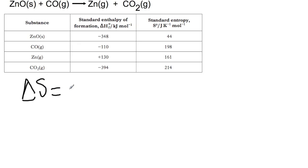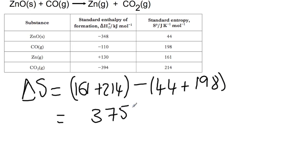Delta S is calculated in exactly the same way. We're going to take the entropy of our products, so 161 plus 214, and we're going to minus the entropy of our reactants, so 44 and 198. That gives us 375 minus 242, which gives us a positive entropy change of 133 joules per K per mole.